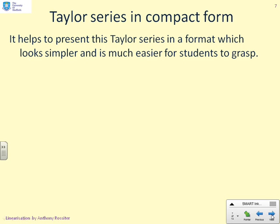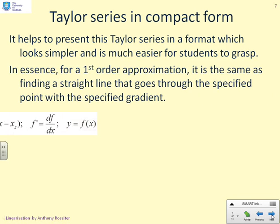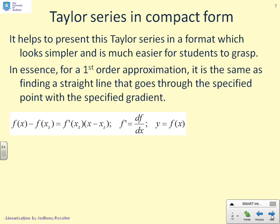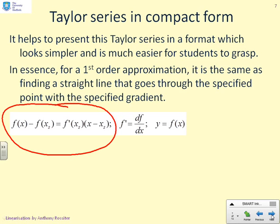We're going to represent the Taylor series in a slightly different format to make it a bit more intuitive. If you do a first-order Taylor series, it's just like putting a straight line through the nonlinear function where you match the value and the gradient at the specified point. Here's the value at the specified point and here's the gradient at the specified point — so all you're doing is matching the value and the gradient at the specified point.